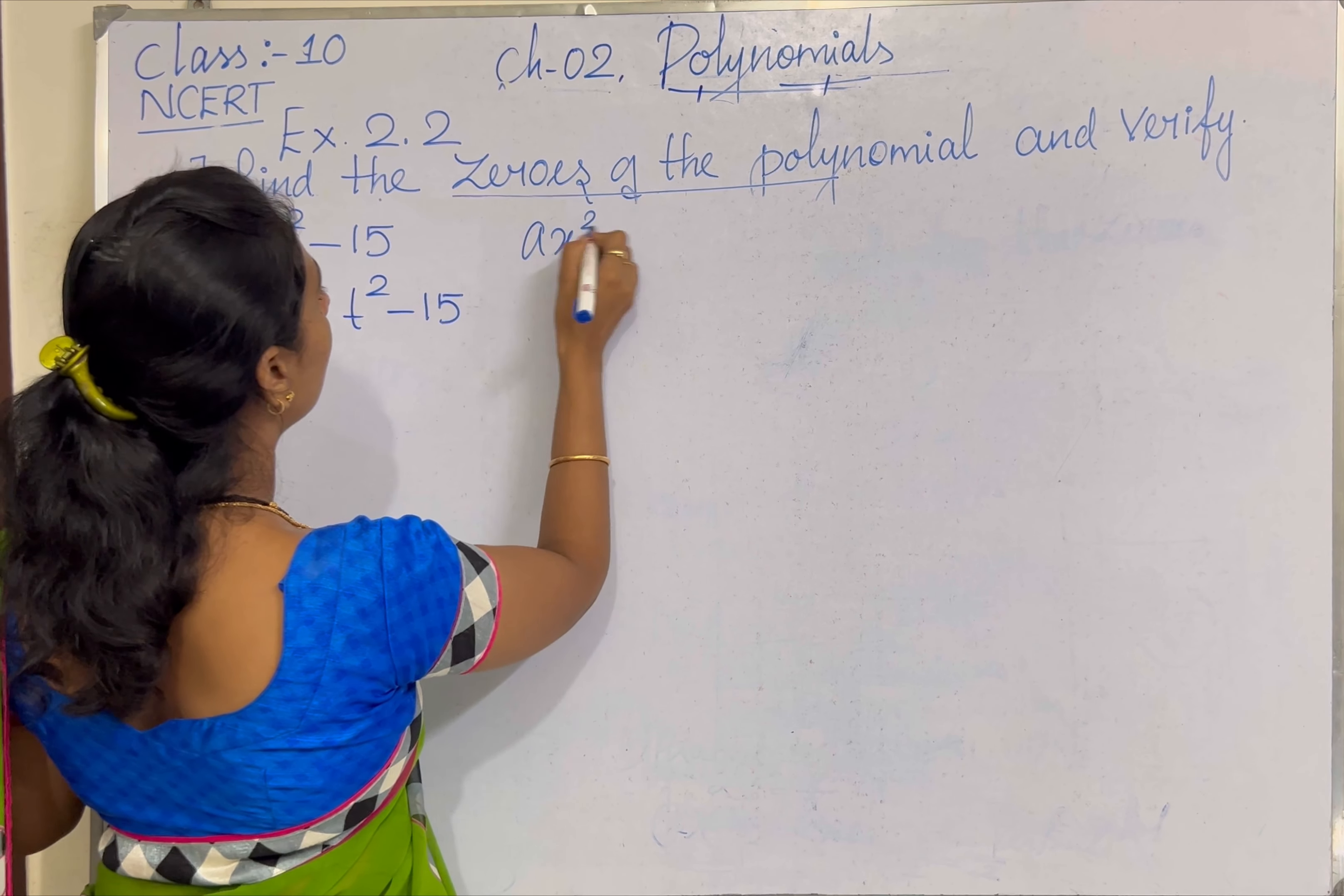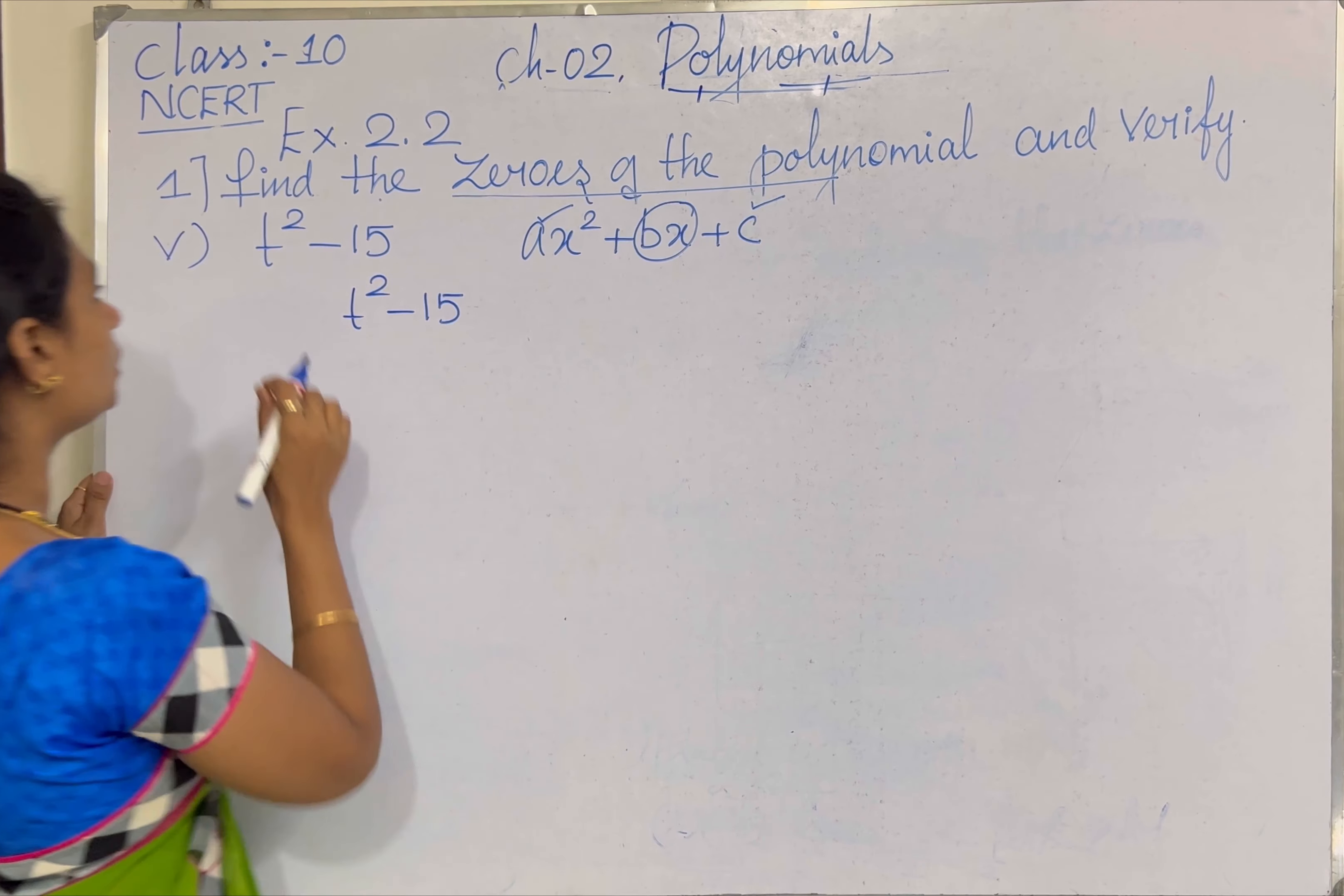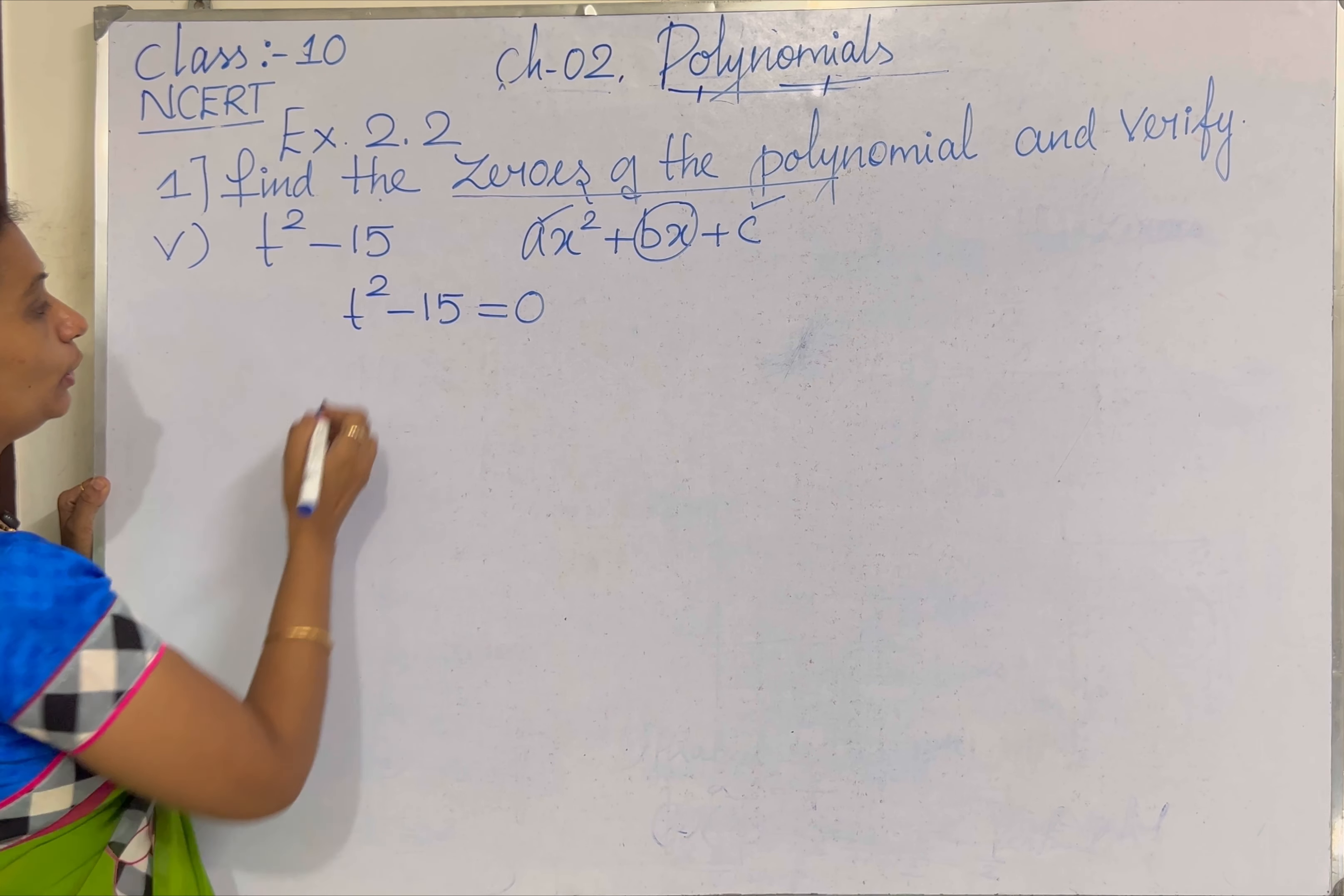When you observe the general form, AX² plus BX plus C, here we have only the X² term and the constant term. The X term is missing. So we can find only the first term and the last term. So directly you can equate them to 0 to find out the zeros of the polynomial.